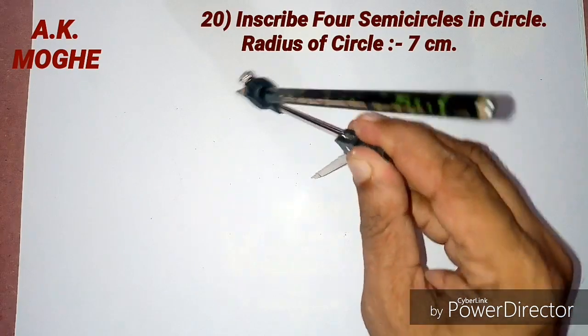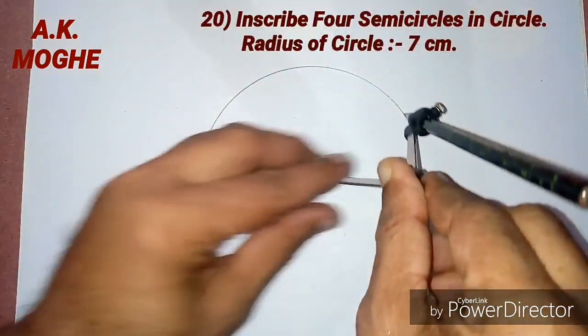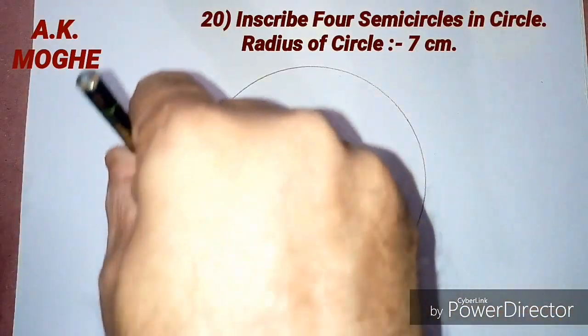Hello guys, welcome to the last lesson in intermediate geometry class. Here we are inscribing 4 semicircles in a circle.